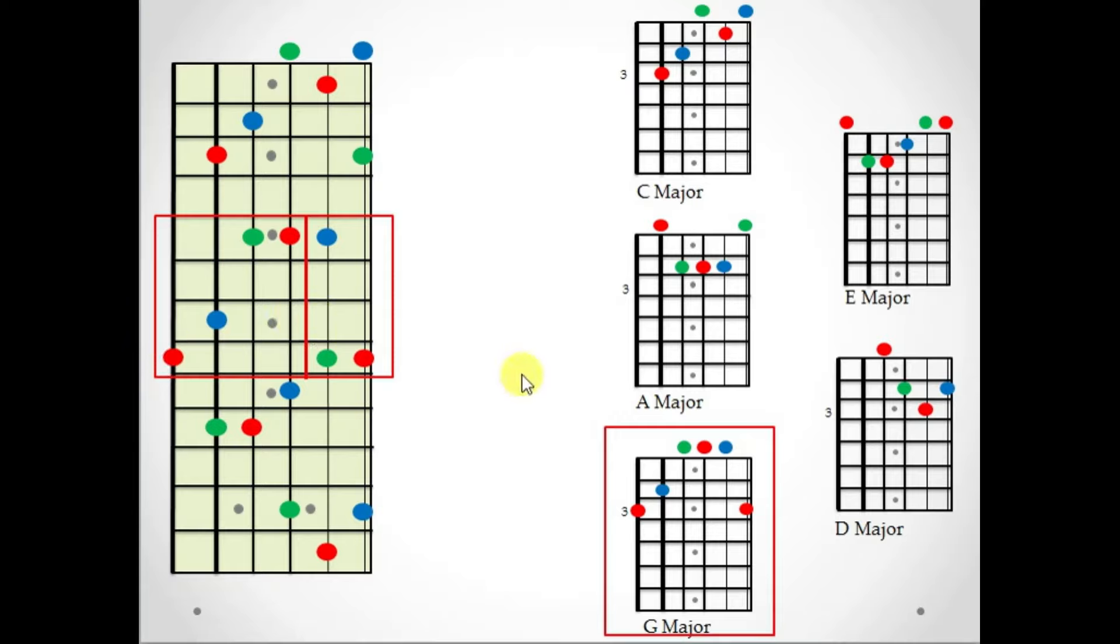Now this is a pretty difficult chord to play, so what I usually do is I break it up into two chunks. The first chunk is right here on the left side, where I usually just play these four notes. I have my fourth finger here, my third finger here, and then I basically bar these two with my first finger. So here's an example of that on the guitar.